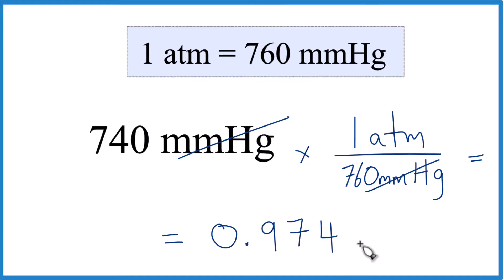In our units, that's atmospheres. So 740 millimeters of mercury equals 0.974 atmospheres. This is Dr. B. Thanks for watching.